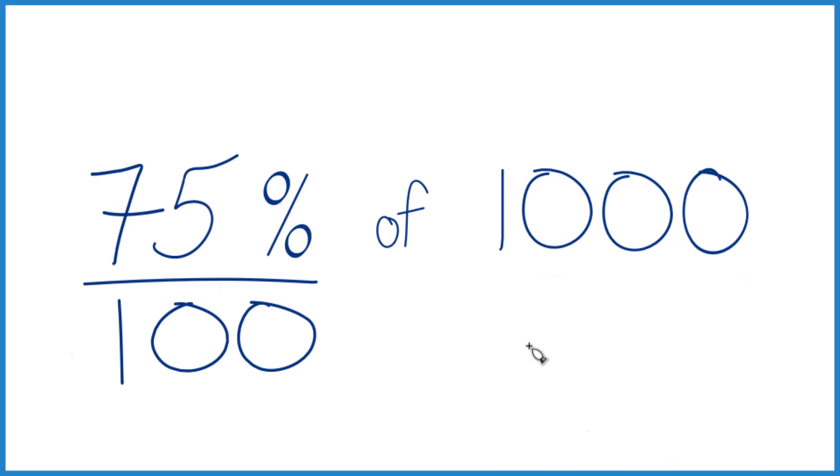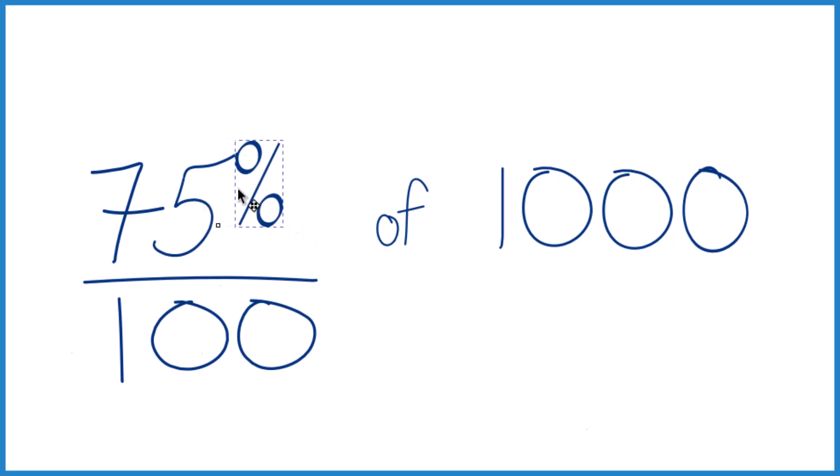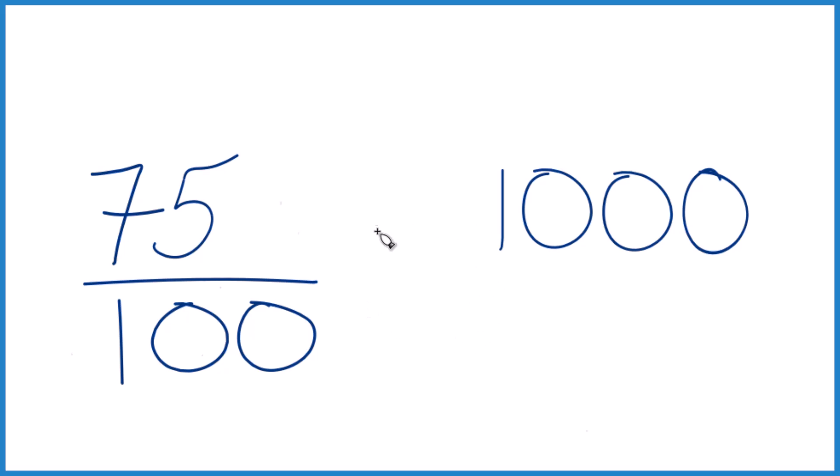Here's another way to do it. We said 75%, that's 75 per 100. Instead of of, we can just use multiplication here. Let's call it 1,000 over 1. It's still 1,000, but everything lines up for us.